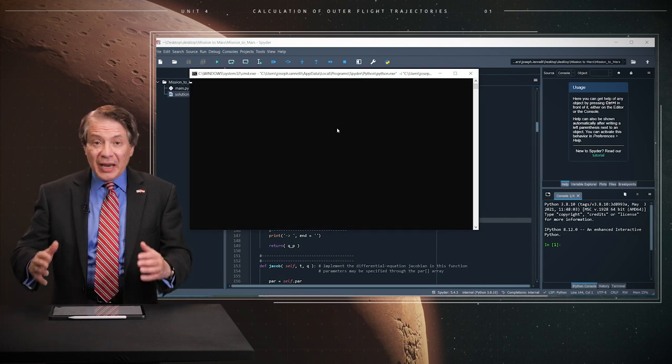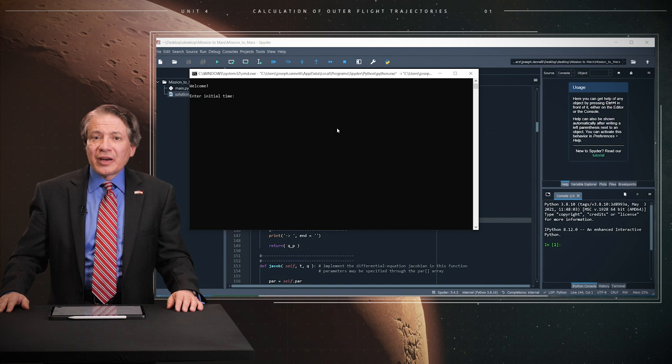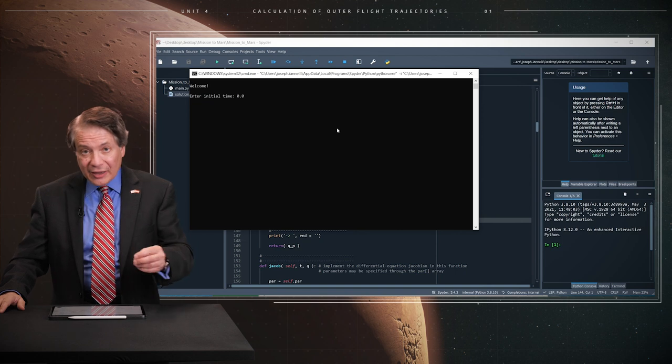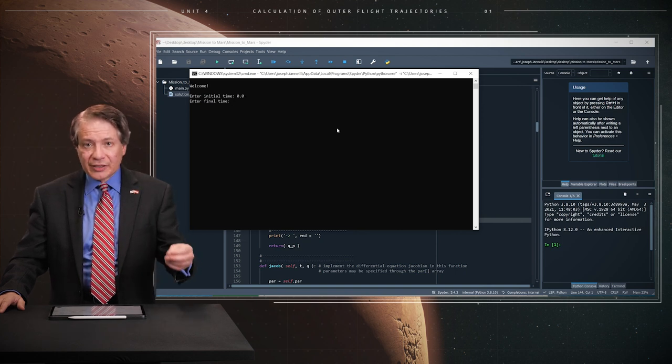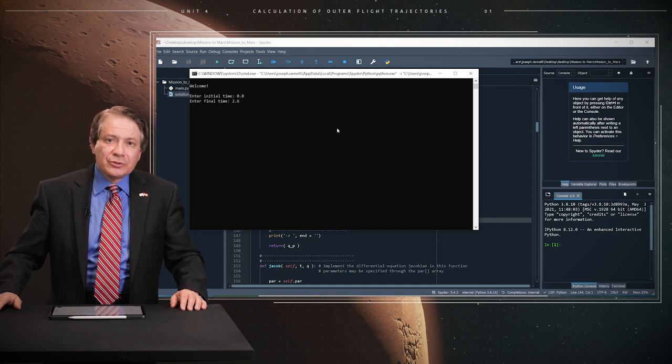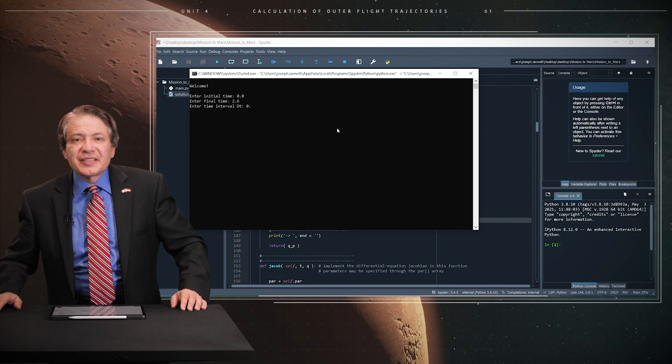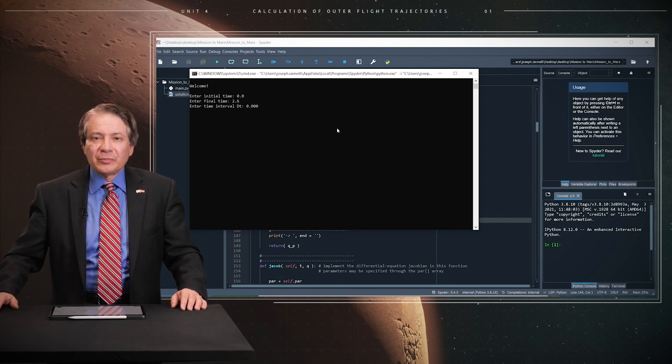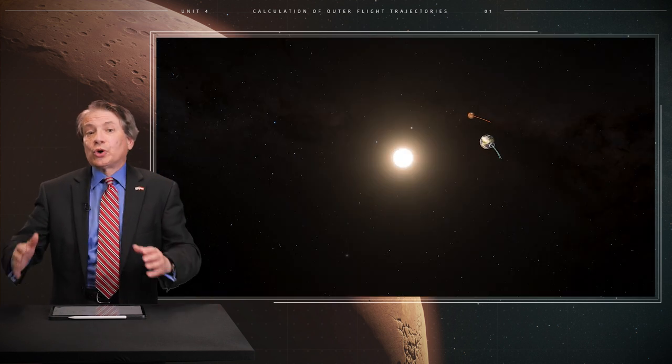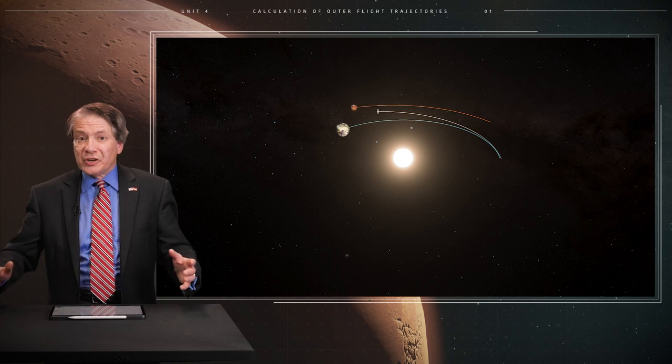The program may then be run. At run time, the program requests an initial time. We can always set that to zero. The final time is what we calculated before and that may be set equal to 2.6 units. The time step will be set equal to 0.0005 units as noted before. Of course, one may select an even smaller time step if one wishes.